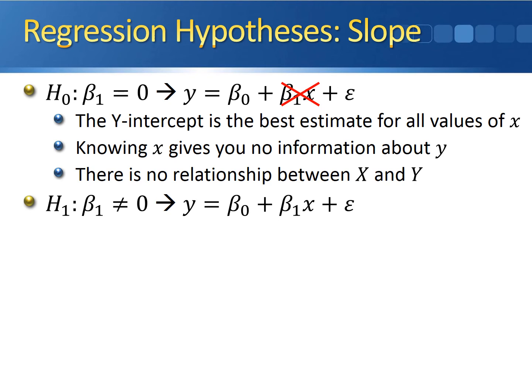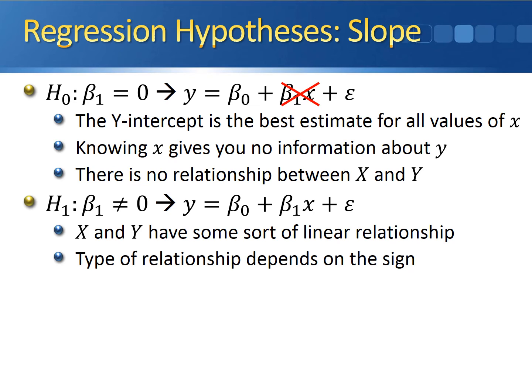The alternative hypothesis for testing the slope is going to be beta1 not equal to 0. What this means is that your linear regression model is going to be y equals beta0 plus beta1x plus epsilon. This tells us that x and y do have some sort of linear relationship. The type of the relationship is going to depend on the sign of the slope.